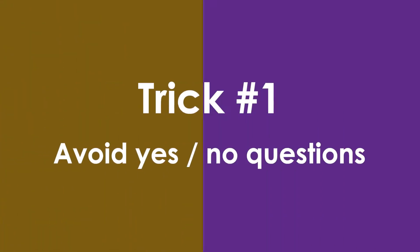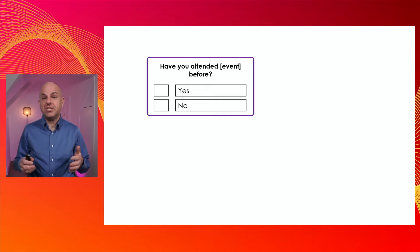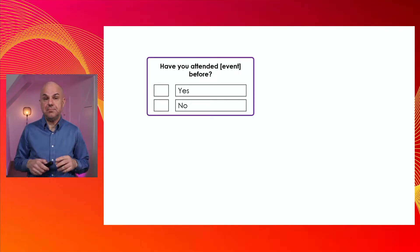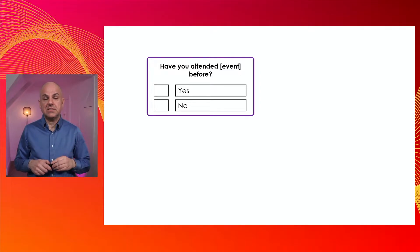What is the first trick? The first trick is to avoid yes-no questions. Let's look at an example. This question is asking participants at an event if they have attended the event before, and the answers are yes or no.